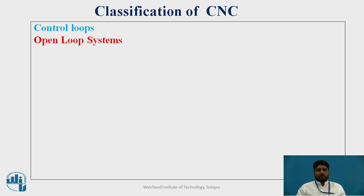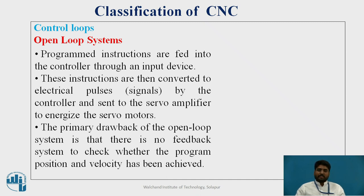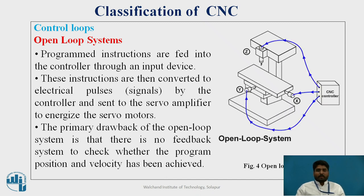As the name itself indicates, an open loop system has no feedback supplied to the program. In the open loop system, programmed instructions are fed into the controller through an input device. These instructions are then converted to electrical pulses — also called signals — by the controller and sent to the servo amplifier to energize the servo motors. The primary drawback of the open loop system is that there is no feedback system to check whether the programmed position and velocity has been achieved. The CNC control sends instructions or signals to the workpiece and to the tool and it performs certain operations.